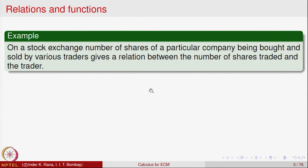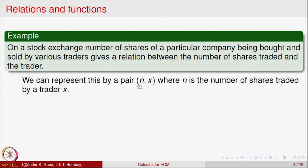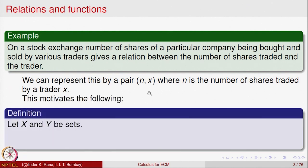When a particular trader buys or sells a share, that gives you a number. So let us say x is a trader and n is the number of shares he has bought or sold. The observations are summarized in a pair called (n, x), where n denotes the number of shares being traded by a particular trader x. This motivates us to define the concept of an ordered pair.